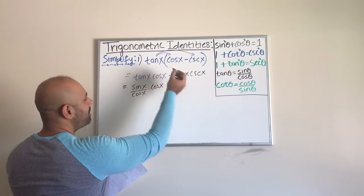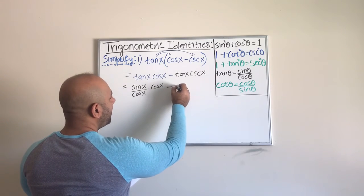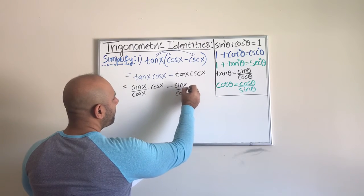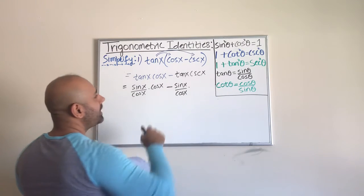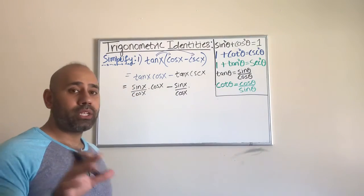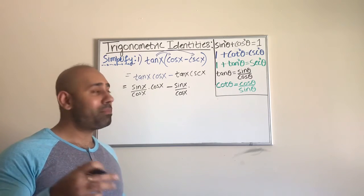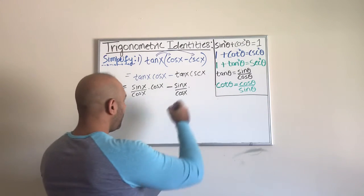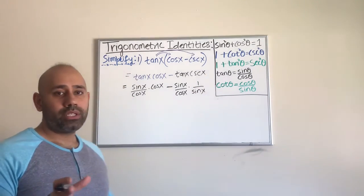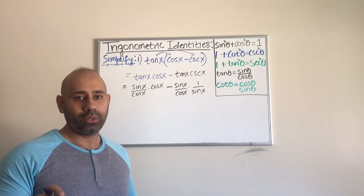Then minus - same thing here with tan(x). Tan(x) is sin(x) over cos(x), and then times cosecant(x). I did not write the formula for cosecant(x), but I expect you to know that cosecant(x) is the reciprocal of sine(x). So that means cosecant(x) would be 1 over sin(x). In your formula sheet that you can get online or in your textbooks, you should already have all those things.